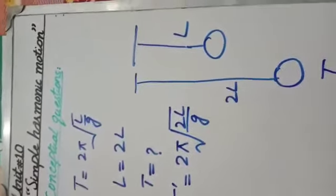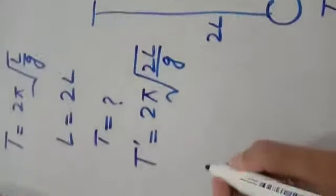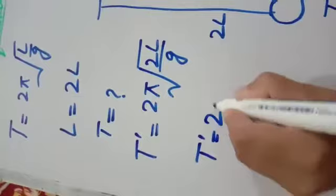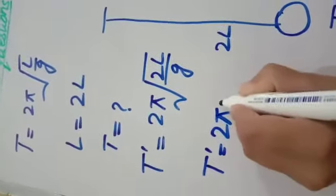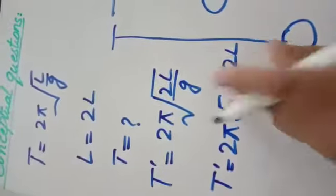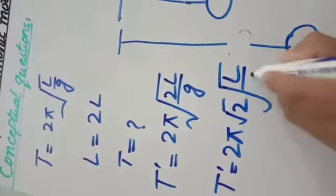Now, we have to put 2l. The new time period is equal to 2π√(2l/g), which is equal to 2π√2 × √(l/g), which is √2 times the original.